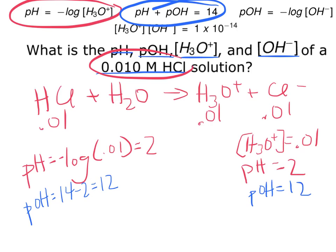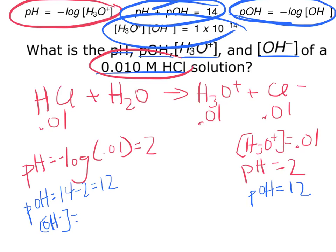And the last thing I'm looking for is OH-. So I can find OH- from pOH, or I can find it from H3O+. That is OH- can be 1 times 10^-12,